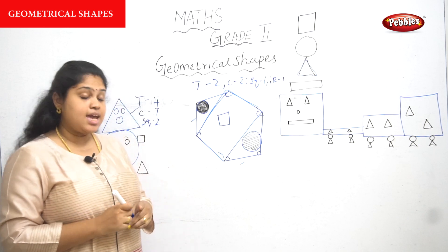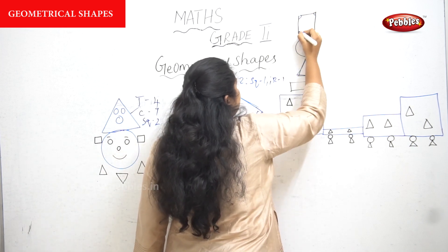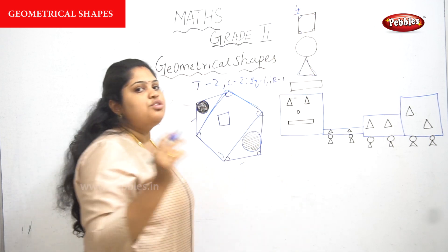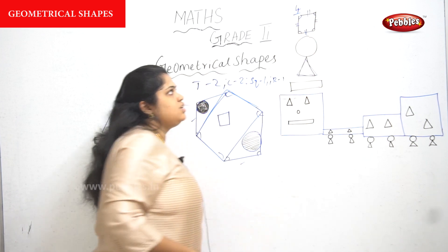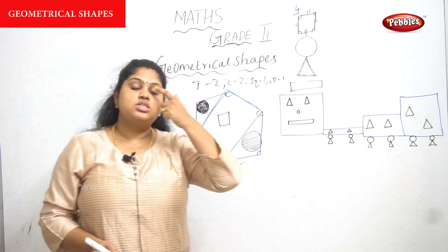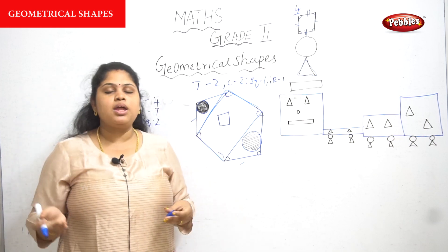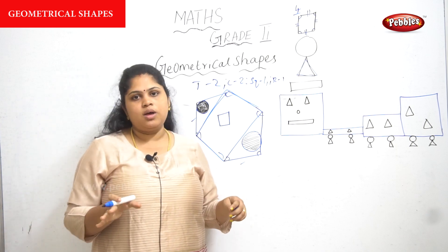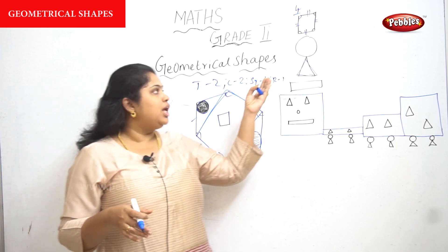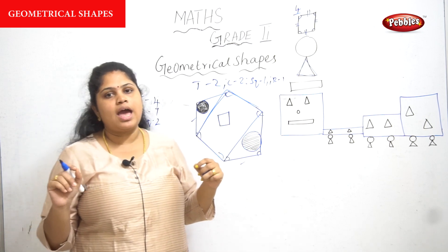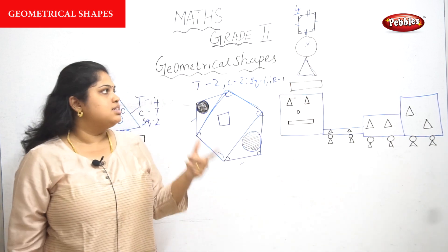Now, how do you identify the sides of each shape? Take a square — how many sides? One, two, three, and four — so four sides. All four sides are equal in length. If one side is four centimeters, all remaining three sides are also four centimeters. If one side is two centimeters, all sides remain the same. So in a square, every side is equal and there are four sides. A circle does not have any sides — it has a center position which we call the radius.